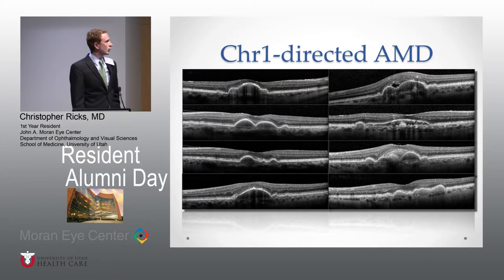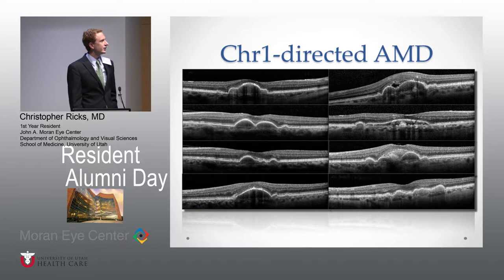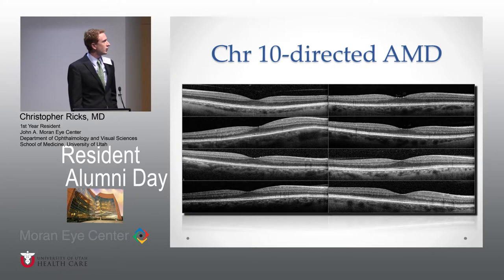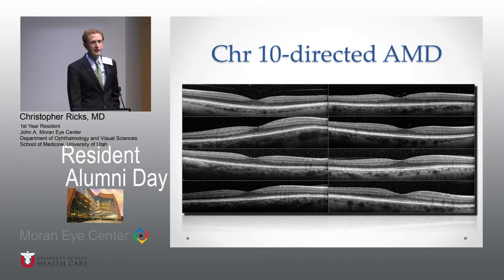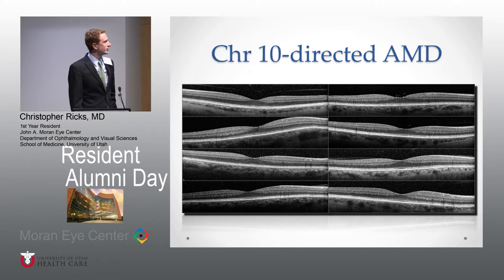A couple of the main differences: chromosome 1-directed AMD shows a lot of pigment epithelial detachments (PEDs) and drusen, whereas chromosome 10-directed AMD doesn't really show PEDs or drusen. Instead, you see this chronic, progressive atrophy.